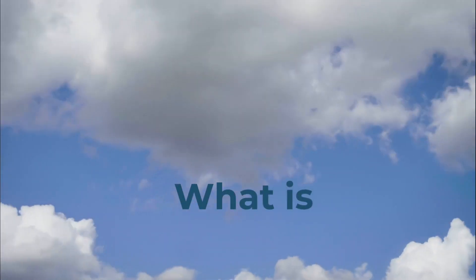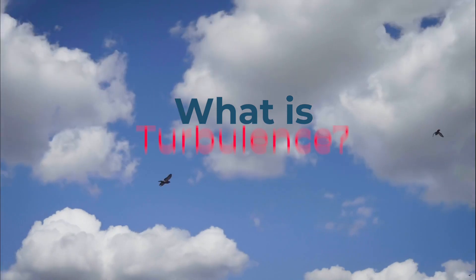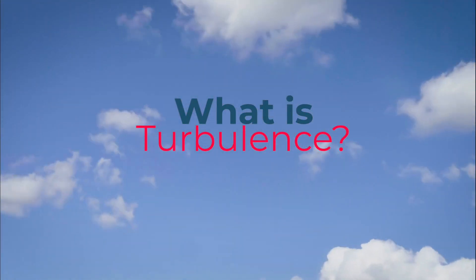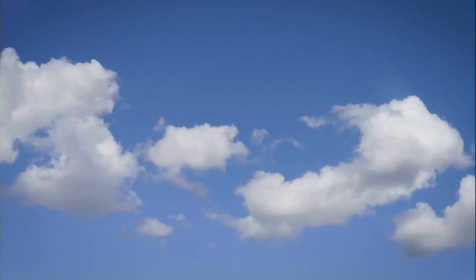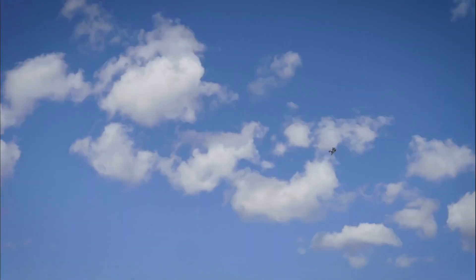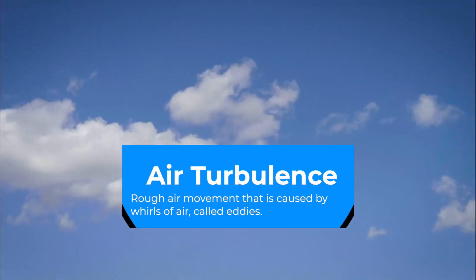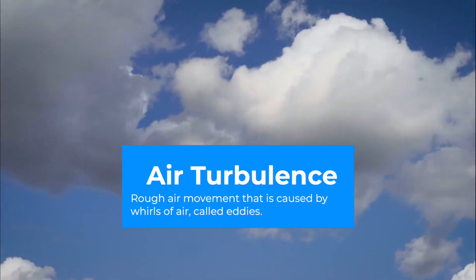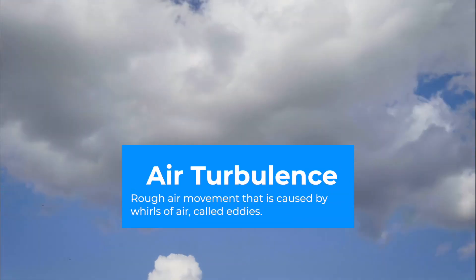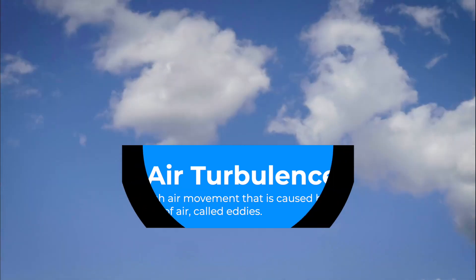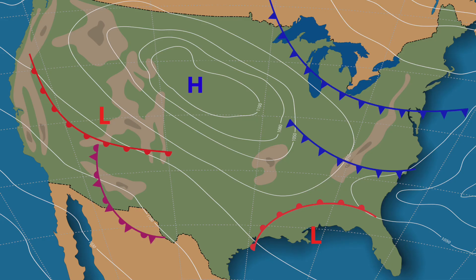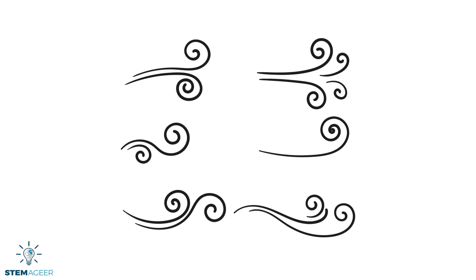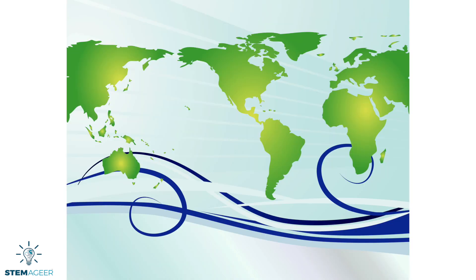So what exactly is air turbulence? According to the National Geographic, air turbulence is a rough air movement that is caused by whirls of air called eddies. Turbulence can be caused by many factors like weather fronts, thunderstorms, wind shear, and jet streams.